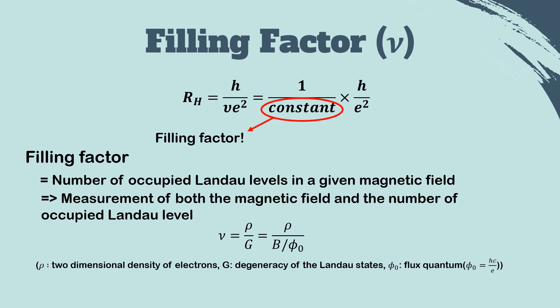The filling factor is a measure of both the magnetic field and the number of occupied Landau levels. Here, the number of electrons that can exist in a given Landau level increases proportionally with the magnetic field strength. If the magnetic field strength increases, then fewer Landau levels are occupied.